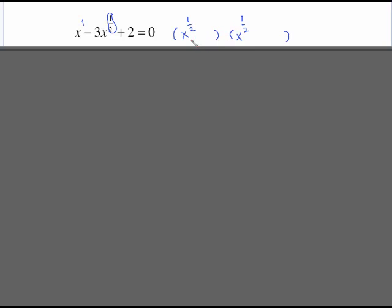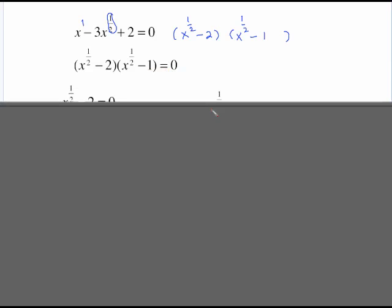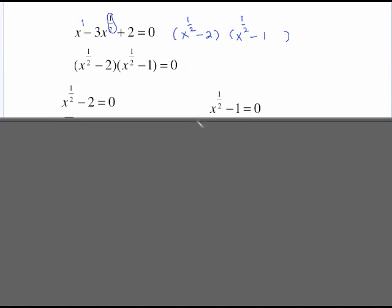Then it's your same sign rules and arithmetic rules from plain old factoring. The last sign is positive and the middle sign is negative, so both of these are negative. What multiplies to give me 2 that adds to give me 3? That's 2 and 1. Once you have it written as something times something equals 0, you can use your zero products property which sets each of those equal to 0 and you solve.